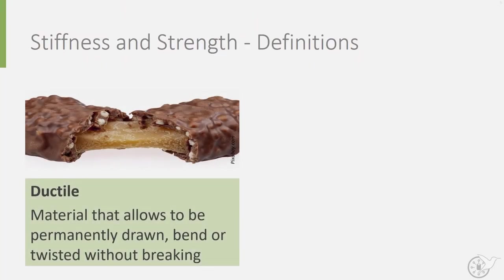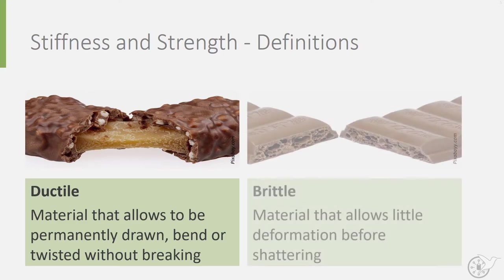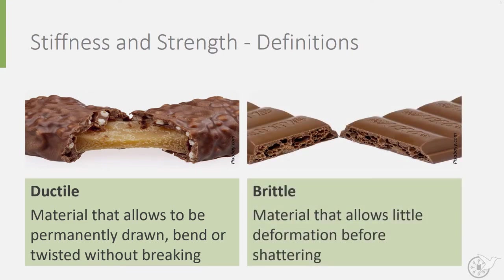This first chocolate bar can be classed as ductile. The material allows for a lot of deformation before breaking in two. The second bar, however, is classed as brittle and allows little to no deformation before breaking.